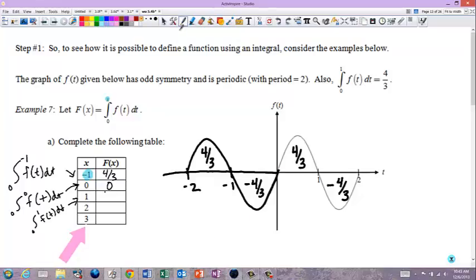So, that's 4 thirds. And then for 2, it would be the integral from 0 to 2 of f of t dt. The integral from 0 to 2 would be 4 thirds plus negative 4 thirds, which would be 0. And then from 0 to 3, well, I would have to make another one. So, it would be 4 thirds plus negative 4 thirds plus 4 thirds, which is 4 thirds.